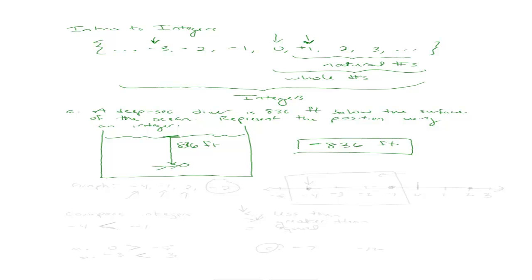You can think of a whole bunch of situations like this — say, if a company lost money, we would represent it as negative numbers. One of the things you might be asked to do in this section is to graph an integer. So let's say we're asked to graph the integers negative 4, negative 1, 2, and negative 2 on the number line. First we're going to draw out a number line.